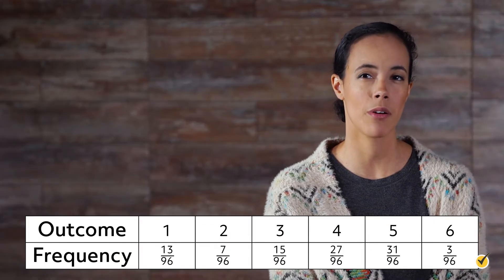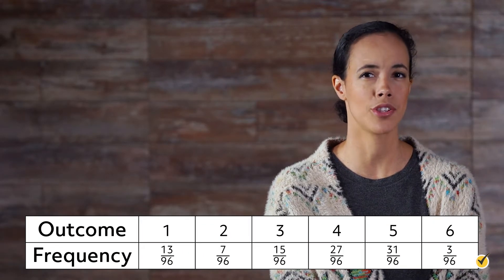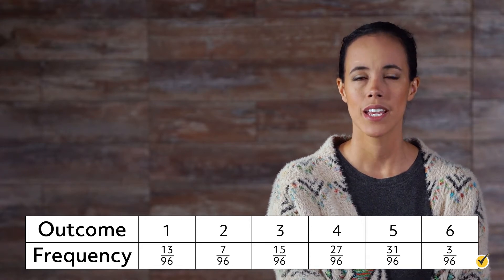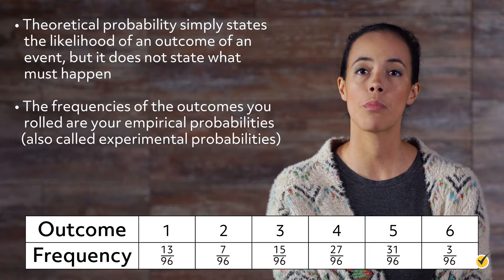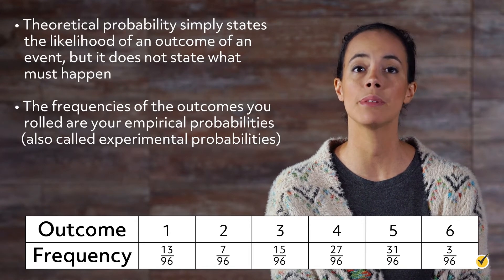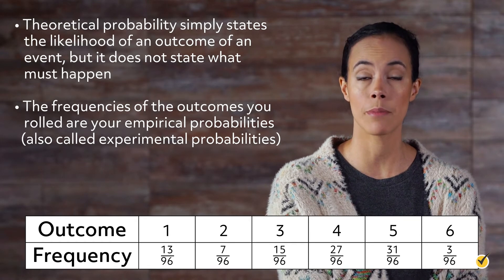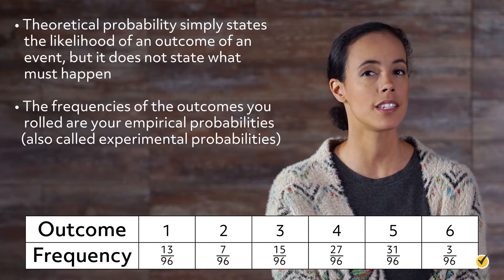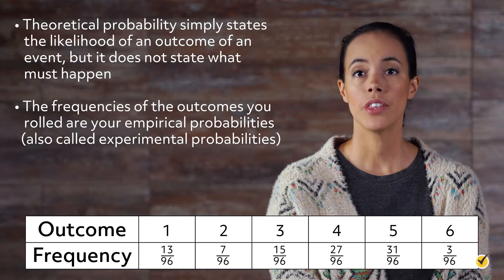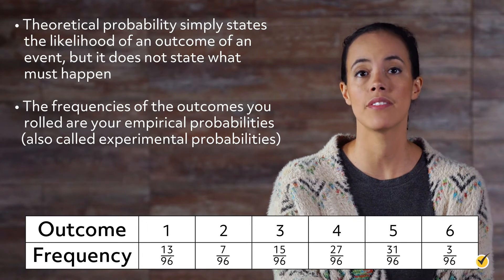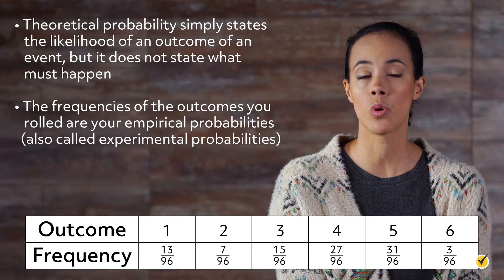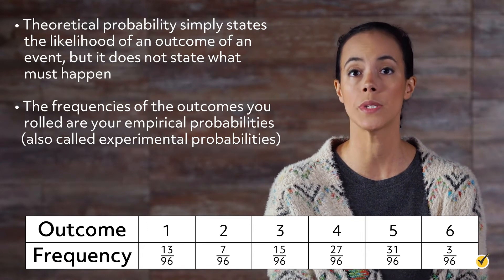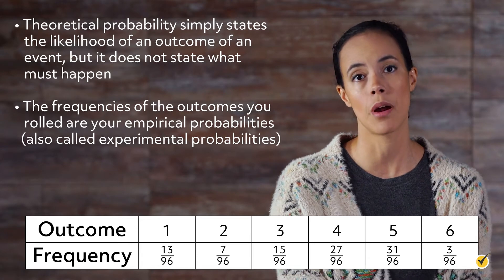Clearly these outcomes didn't match their theoretical probabilities. Why? Theoretical probability simply states the likelihood of an outcome of an event, but it does not state what must happen. The frequencies of the outcomes you rolled are your empirical probabilities, also called experimental probabilities.